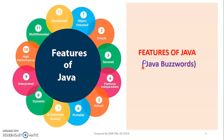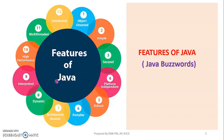This is the overall view of Java features. The features are: Object Oriented, Simple, Secure, Platform Independent, Robust, Portable, Architecture Neutral, Dynamic, Interpreted, High Performance, Multi-Threaded, and Distributed. These are all the important features of the Java language.